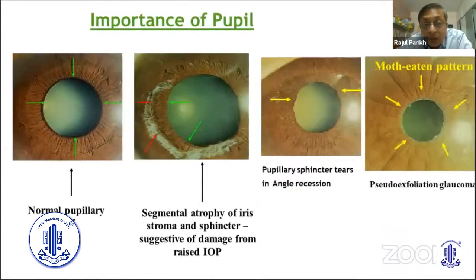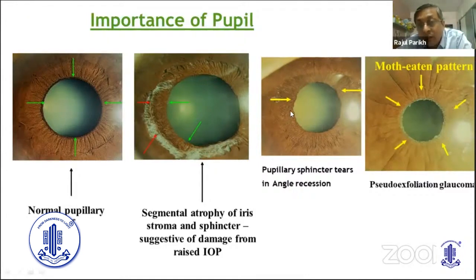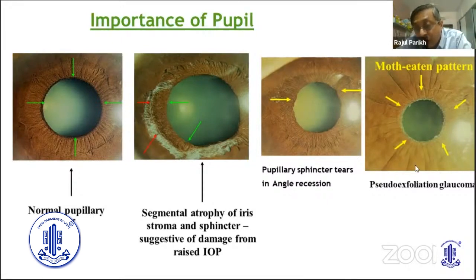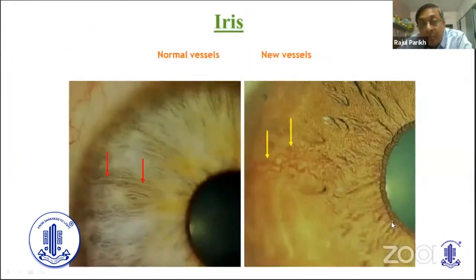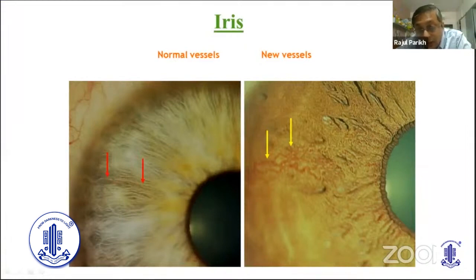In pupil examination, if there is an acute rise in IOP, the patient can have sphincter atrophy. The sphincter tail will lead you to the diagnosis of angle recession. If you do proper gonioscopy, the moth-eaten appearance will give you the idea that the patient has pseudo-exfoliation. In iris examination, if you do a careful examination, then you will pick up the cause — for example, that the patient basically has neovascular glaucoma and not something else.